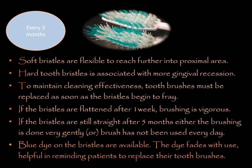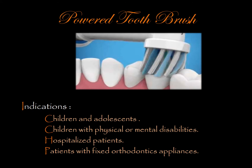To maintain cleaning effectiveness, toothbrush bristles must be replaced as soon as they begin to fray — approximately once every three months. If the bristles are flattened after one day, the brushing is too vigorous. If the bristles are still straight after five months, either the brushing is very gentle, not done properly, or not used every day. Some advancements include a blue dye on the bristles that fades with use, reminding patients to replace their toothbrush.